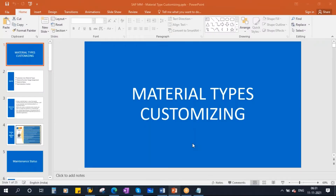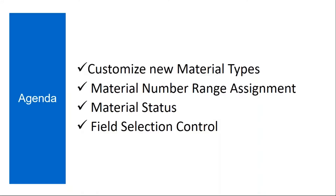This conference will now be recorded. We'll be starting our next topic: material types. The topics we are going to cover include how to customize new material types, material number range assignment, material status, and field selection control. These are the topics we will be covering in the material type customizing.